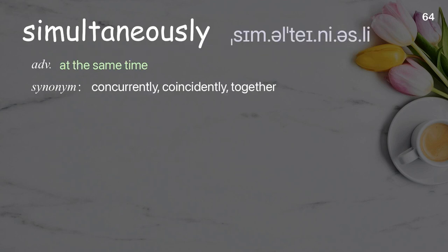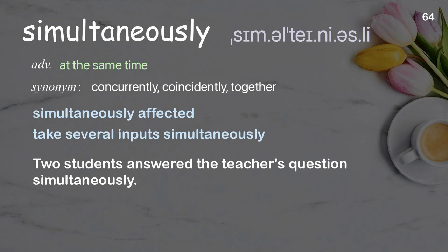Simultaneously. At the same time. Examples: Simultaneously affected, take several inputs simultaneously. Two students answered the teacher's question simultaneously.